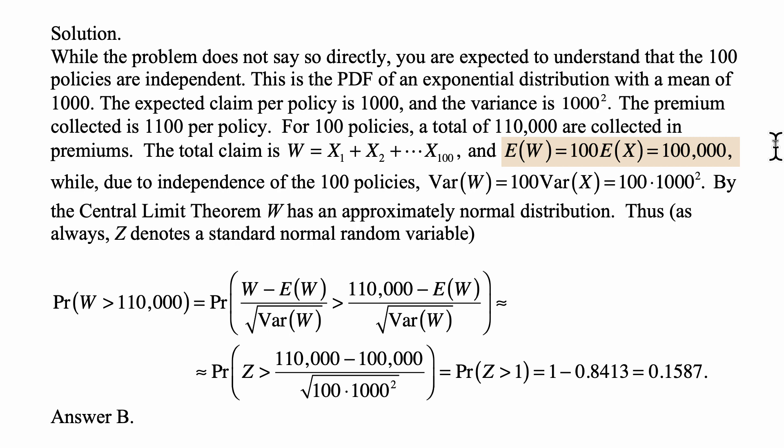...is greater than (110,000 - 100,000) over the square root of, what is the variance? Well, it's 100 times 1,000 squared. And that's the same as probability that Z is greater than 1, because this right-hand side number is exactly 1.